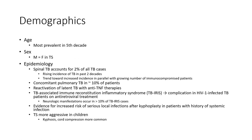Demographically, spinal TB is most prevalent in the fifth decade of life, with males and females equally affected. Epidemiologically, spinal TB accounts for 2% of all TB cases, with concomitant pulmonary TB found in around 10% of patients.